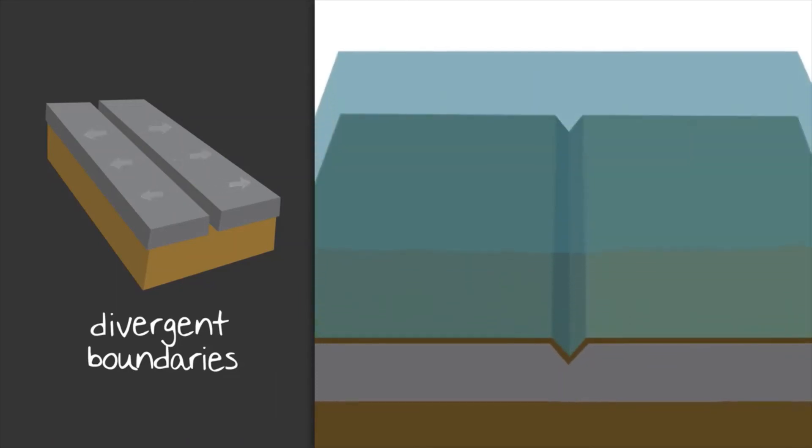or if the space between the two plates is under the ocean, where the crust is thinner, magma oozes up from the Earth's mantle and fills the space. This is called seafloor spreading.